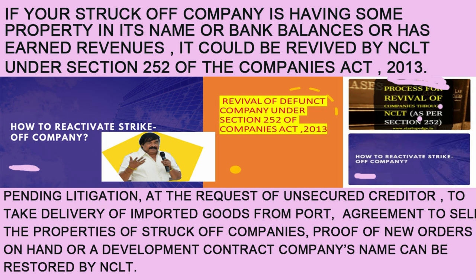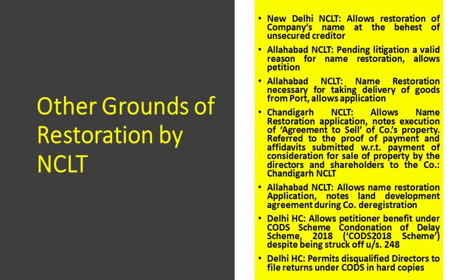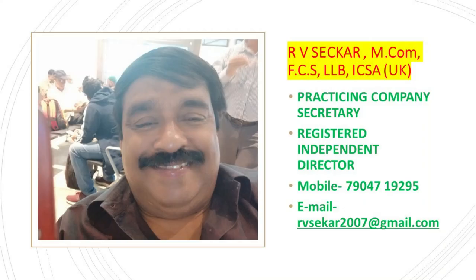To sum up: if your company has been struck off and it has some property in its name, bank balance, earned revenue, pending litigation, or an unsecured creditor can request NCLT to revive it — or to take delivery of imported products from the port, an agreement to sell the properties of struck off companies, proof of new orders on hand, or a development contract in the case of real estate companies — the name of the company can be restored under Section 252 of the Companies Act.